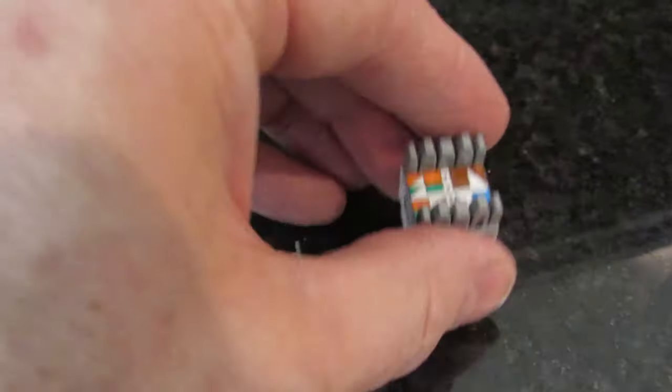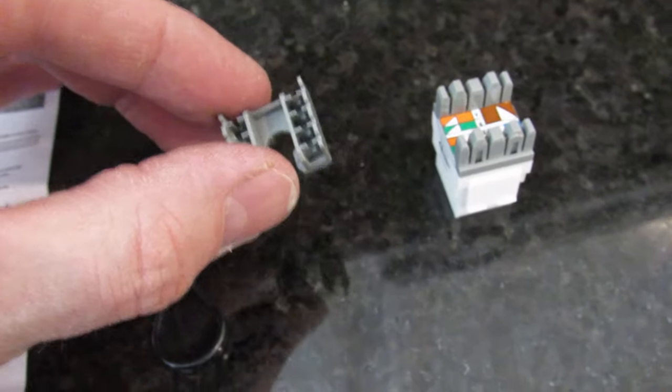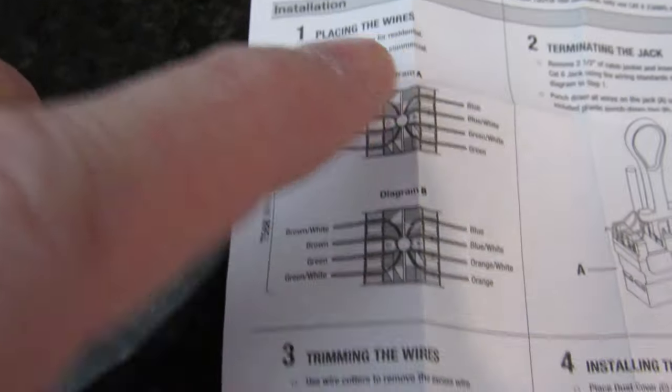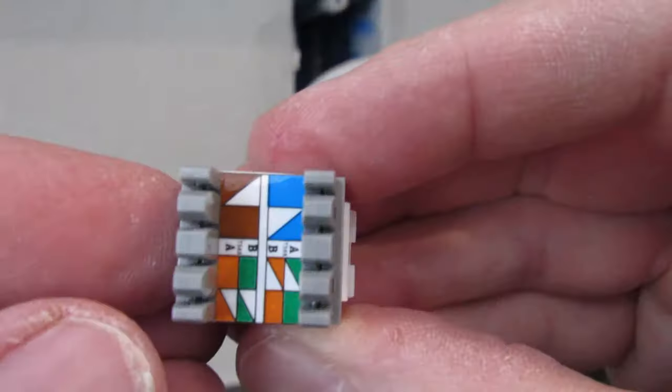Let's take a look at the Cat6 wall jack. There's your wall jack, there's the cover, and the punch down tool. Also comes with instructions and your wiring diagrams. Now we're going to use the residential diagram obviously.